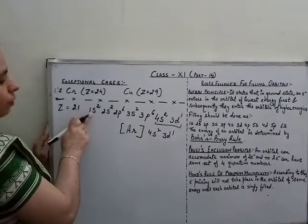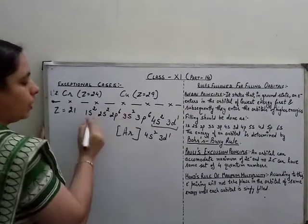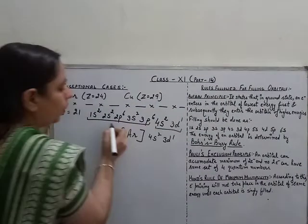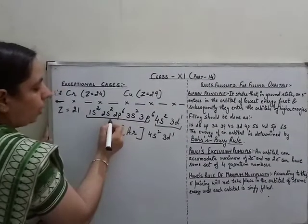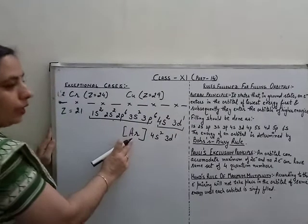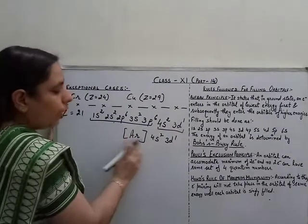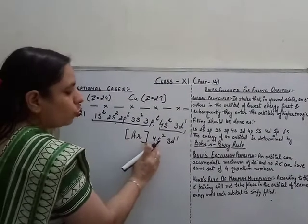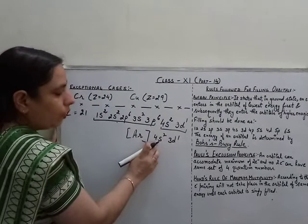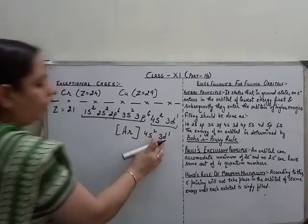The reason is that 1s2, 2s2, 2p6, 3s2, 3p6 accommodates 18 electrons, which is the configuration of Argon. So we write it as [Ar] 4s2 3d1. Electrons enter 4s first and then 3d. Similarly, for the element with atomic number 22, the configuration is 1s2, 2s2, 2p6, 3s2, 3p6, 4s2, 3d2, which we write as [Ar] 4s2 3d2.